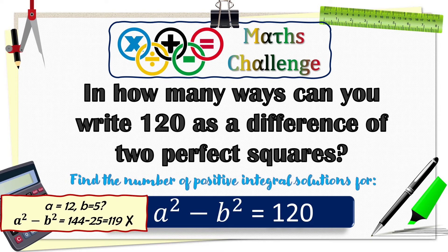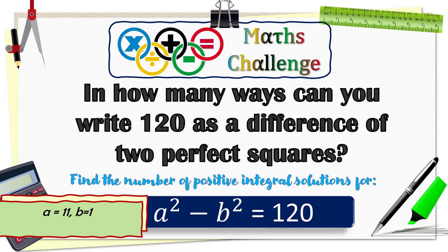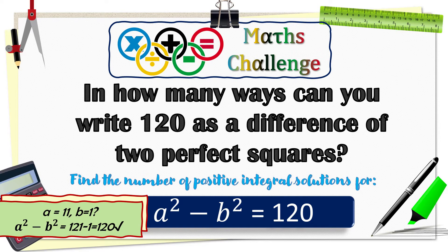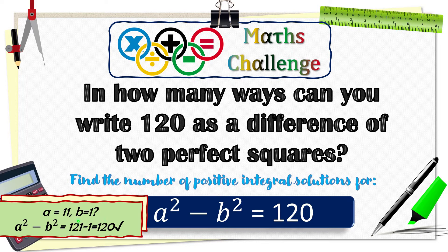Okay, take another guess. The easiest would be 121 minus 1 which is 11 square minus 1 square. So a is equal to 11 and b is equal to 1 is indeed one of the solutions.